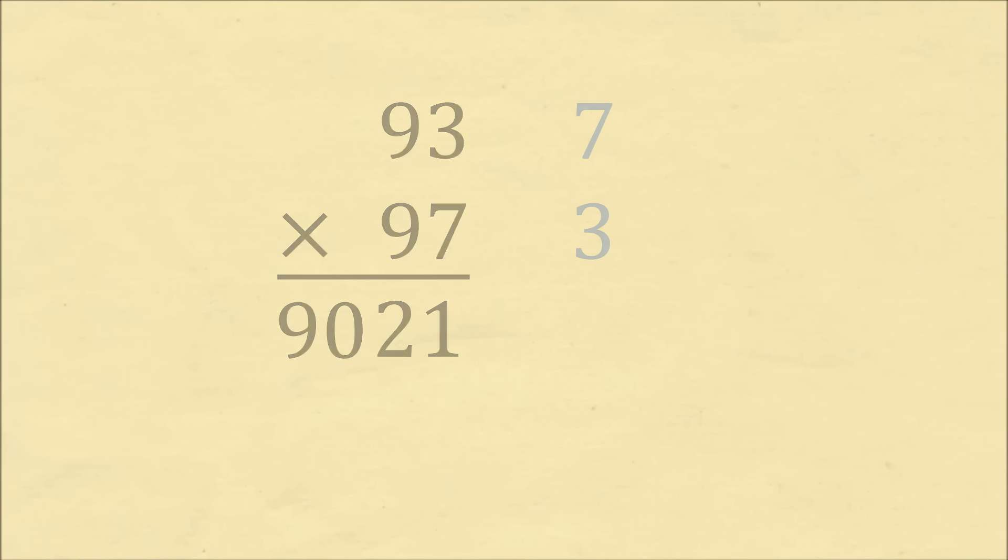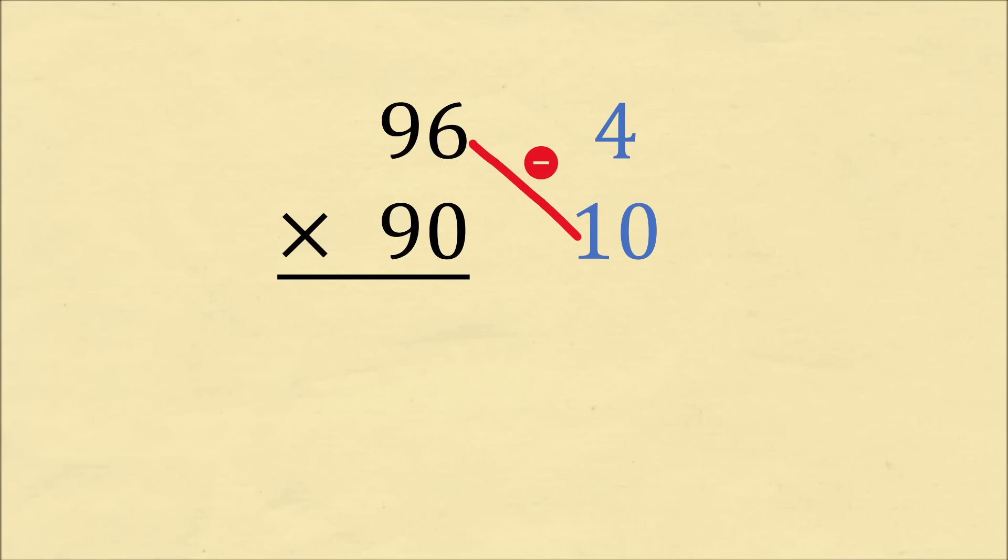Let's do another example. What is 96 times 90? We first analyze each number. To bring 96 to a total of 100, we need to add 4. To bring 90 to a total of 100, we would need to add 10. Now we cross-subtract. 96 minus 10 is equal to 86, and 4 times 10 is equal to 40. So we know that 96 times 90 is equal to 8640. Wow!